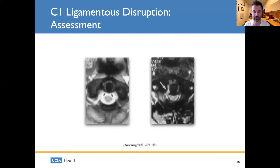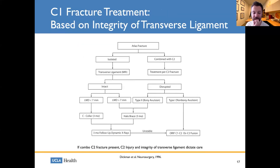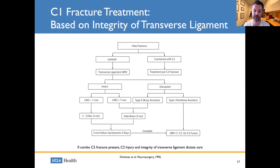This MRI shows a normal transverse ligament on the left and a torn transverse ligament on the right. In terms of treatment: whenever there is a concomitant C2 fracture, the C2 fracture will dictate treatment of the C1 fracture. If the transverse ligament is intact, halo rigid immobilization can be tried. If it's not intact and lateral displacement is significant, internal fixation will be necessary.